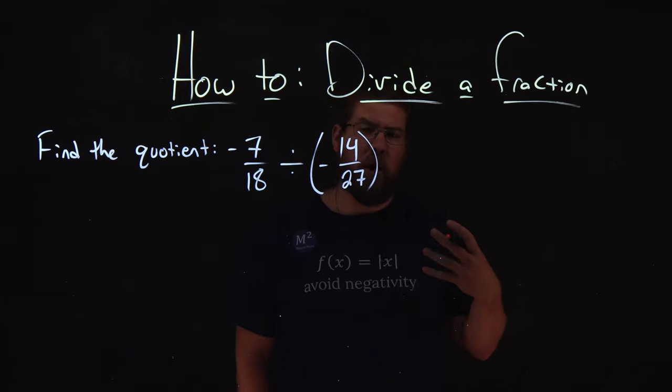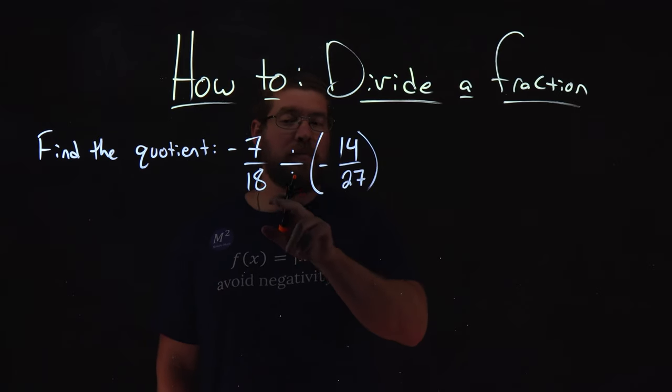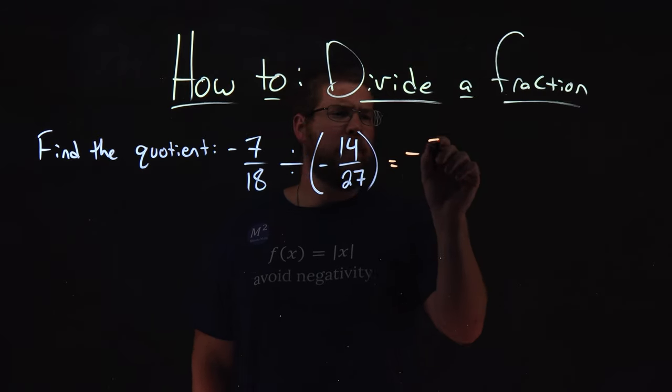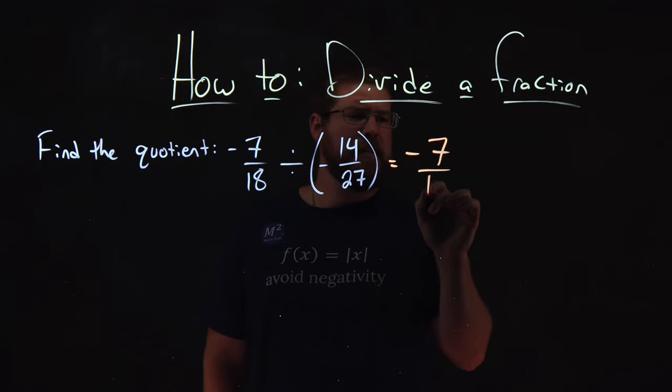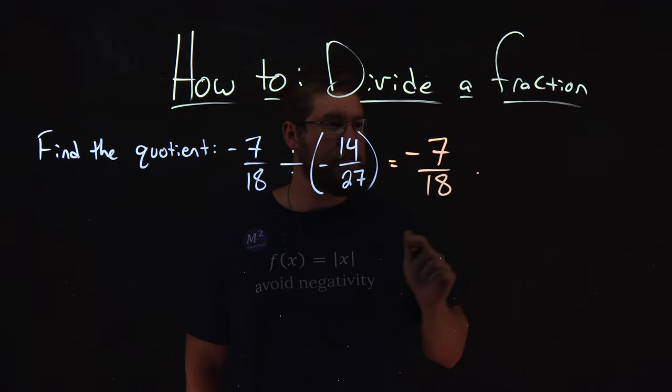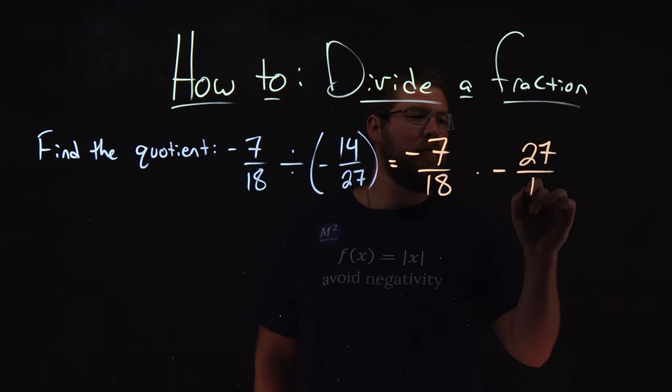One thing we know is that when we divide a fraction, it's the same thing as multiplying the second number's reciprocal. So what does that mean? We keep the front fraction, negative 7 over 18, and that's going to be multiplied by the reciprocal of the second number. We still have a negative here, 27 over 14 now.